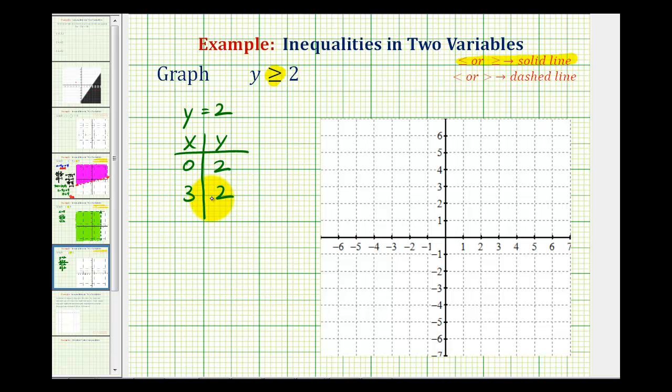Now we'll graph these two points and sketch our line. Point (0,2) is here, and the point (3,2) is here. We have easily verified that we are going to have a horizontal line. And again, it's going to be a solid line, so it's going to look something like this.